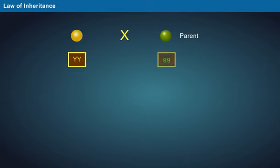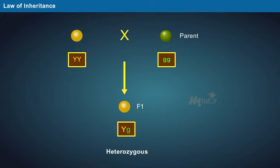On the other hand, the F1 generation was heterozygous as they inherited a different allele from each parent.